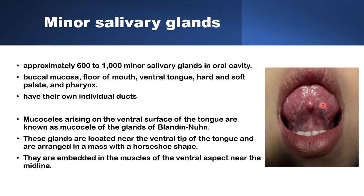Mucoceles arising on the ventral surface of the tongue are special. They are known as mucoceles of the glands of Blandin-Noon. These glands are located near the ventral tip of the tongue and are arranged in a horseshoe distribution on the ventral surface. What's peculiar about them is that these minor salivary glands are embedded into the muscles on the ventral aspect of the tongue near the tip and near the midline, which is why their treatment is also special, as reaching these glands may not be straightforward.